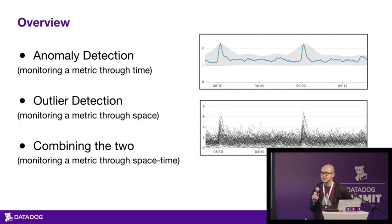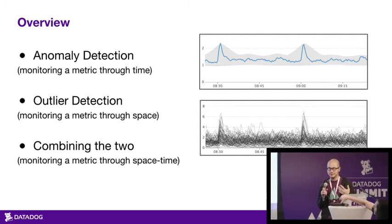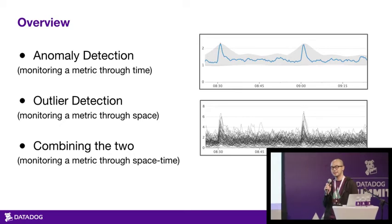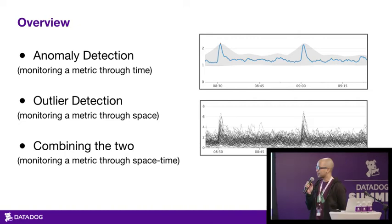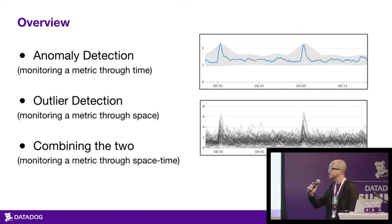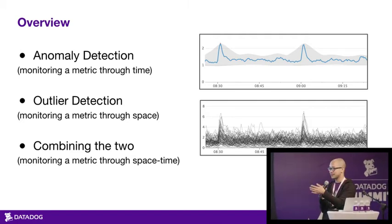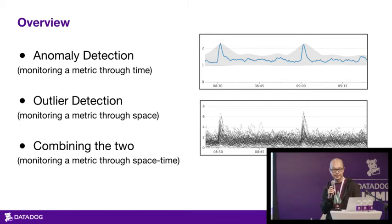First I'm going to be introducing anomaly detection, which is a feature being released today or maybe tomorrow. This is about monitoring a metric through time — looking at a metric's past history to figure out whether it's anomalous. I'll also contrast that with outlier detection, which is monitoring a metric through space: are several metrics close to each other, or is one of them an outlier? And then I'll talk about combining the two.